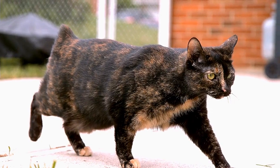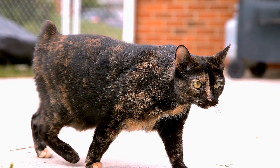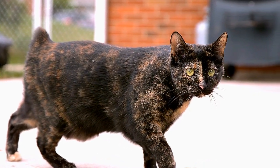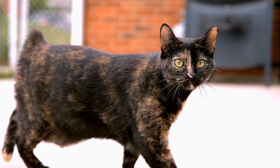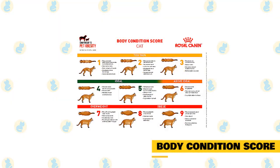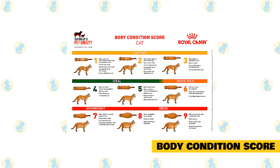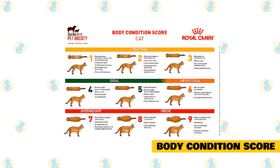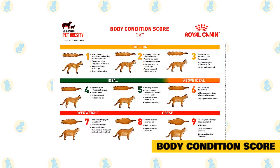In humans, published charts may be helpful in determining the ideal weight for specific body size. Since our pets vary dramatically in body size and shape, charts are not as useful. Instead, we visually grade pets using a Body Condition Score. The BCS is a somewhat subjective rating used to standardize the level of an animal's weight. Pets are scored from 1 to 9, with 4 to 5 being an ideal body weight.